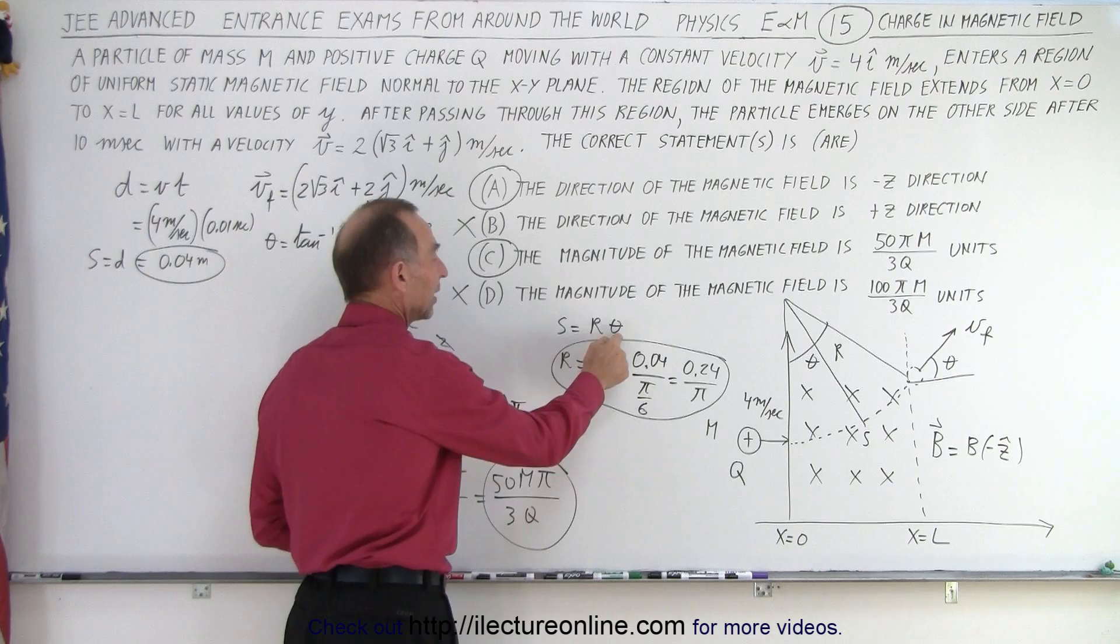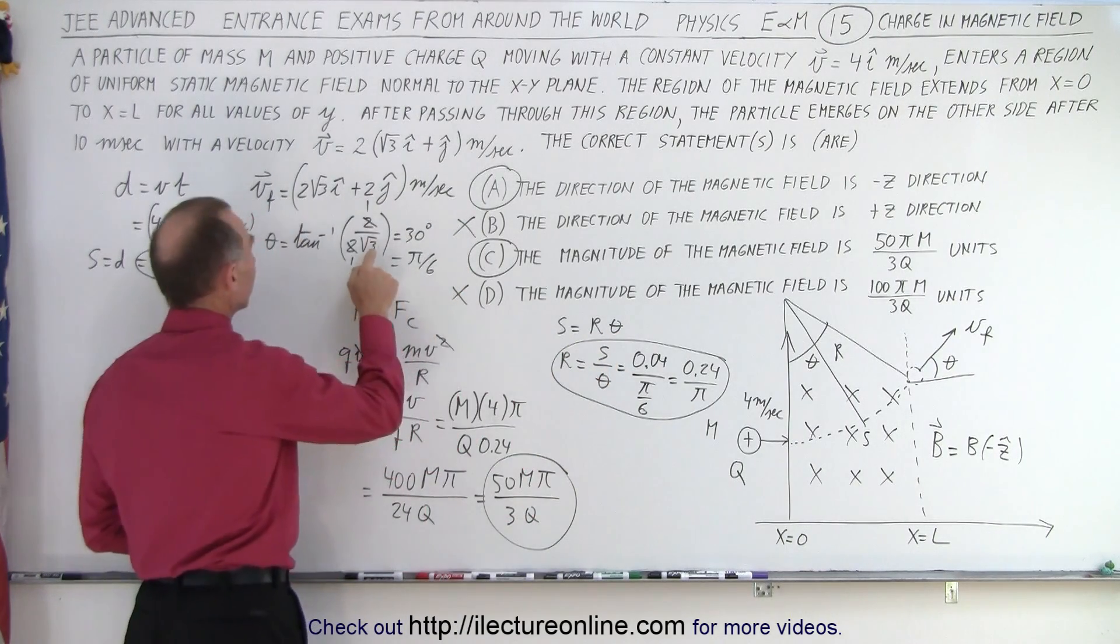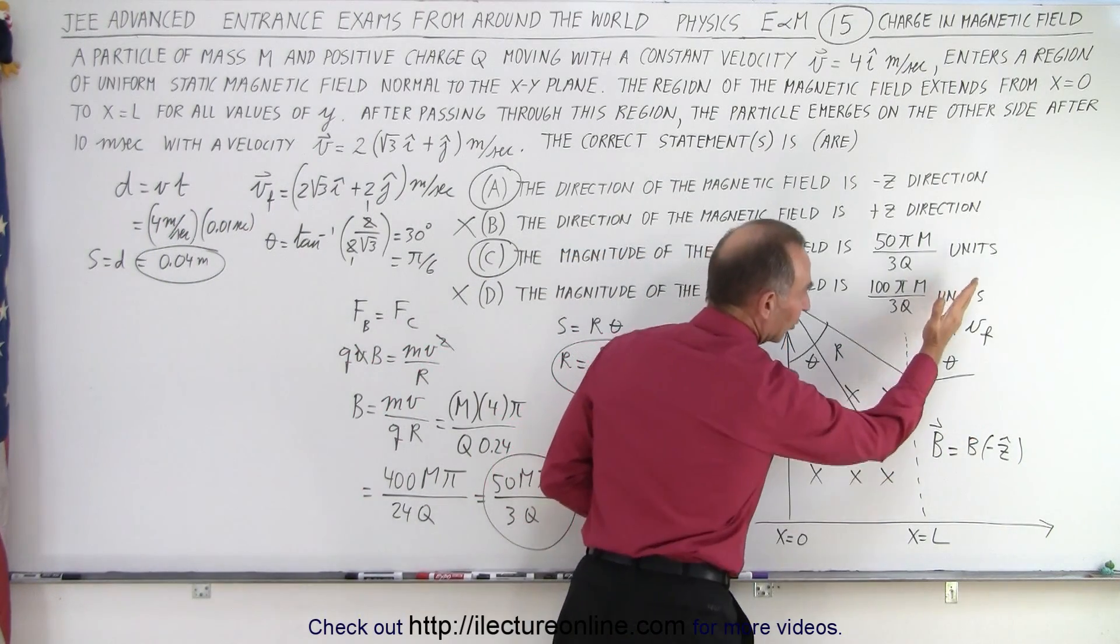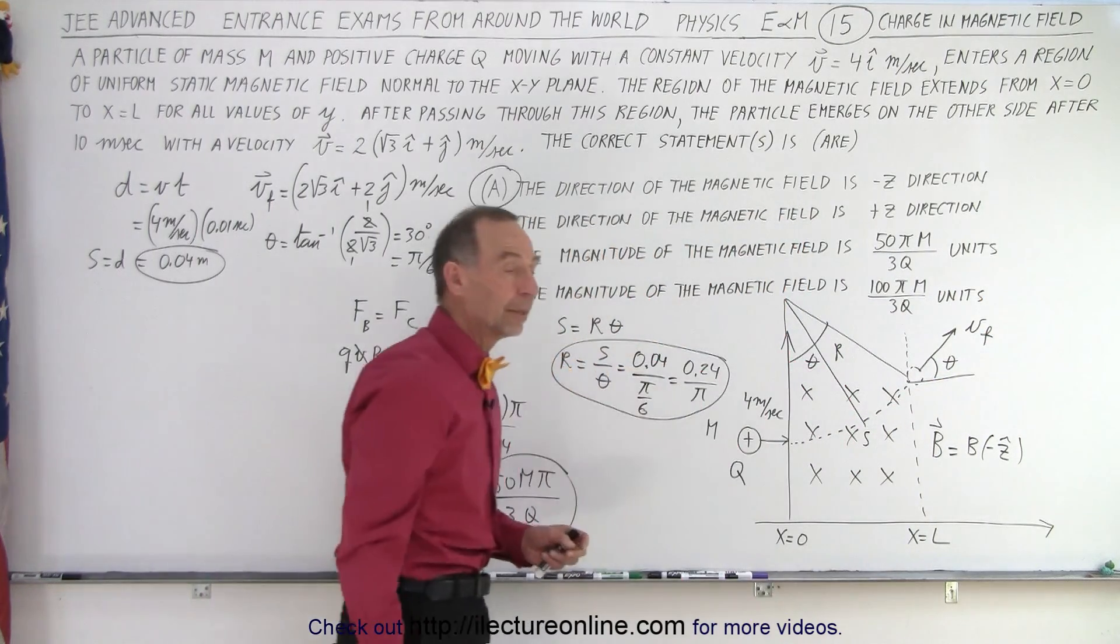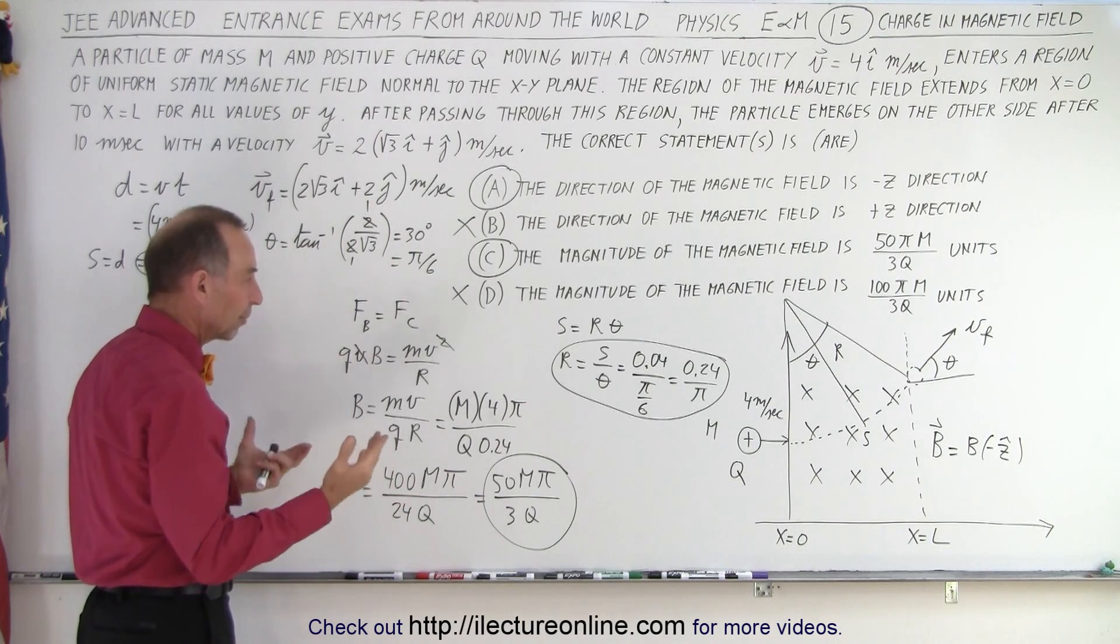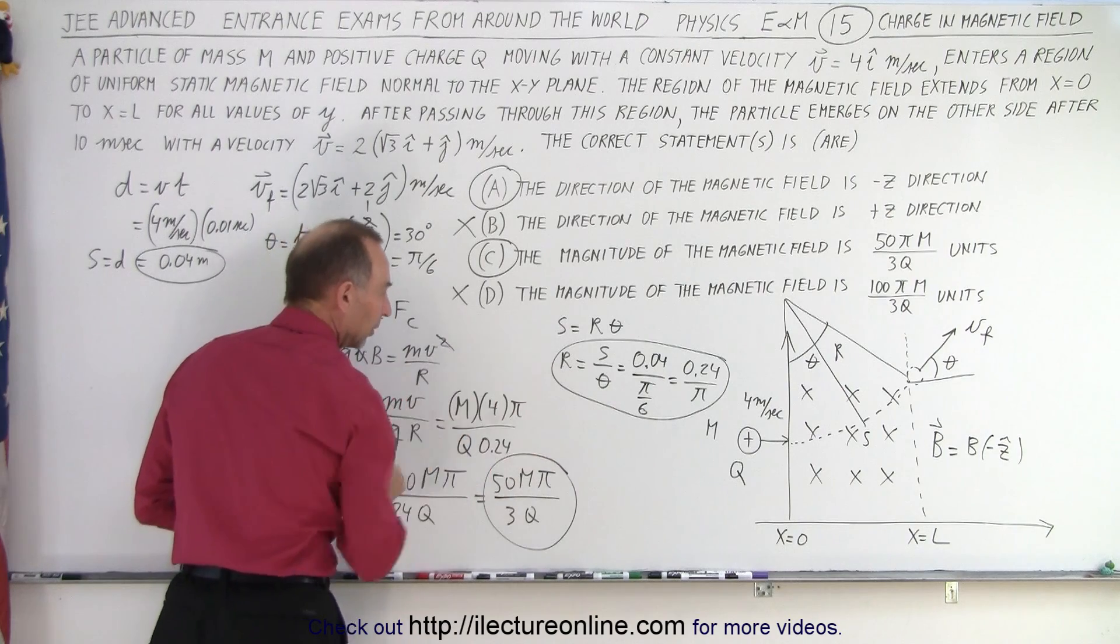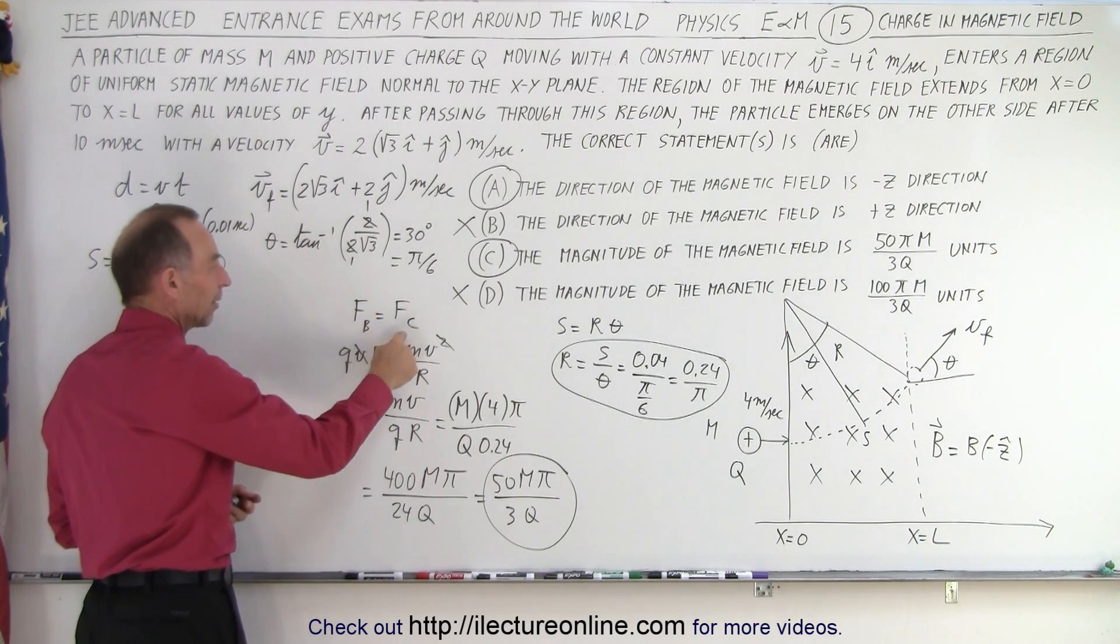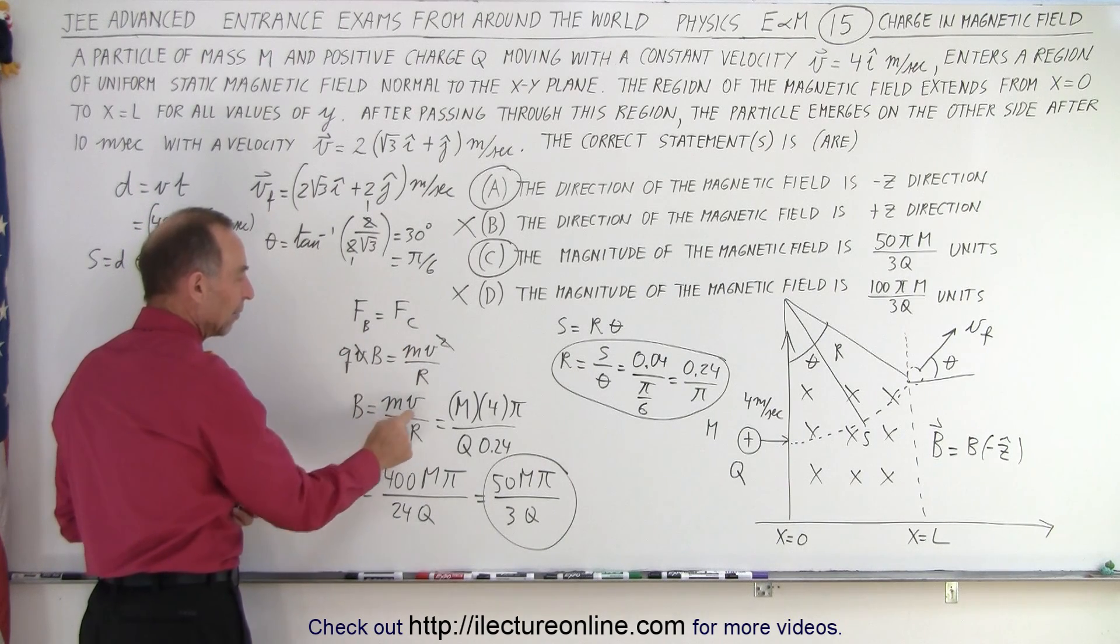Knowing the relationship between arc length equals r times theta, we're able to find r. We're able to find theta because theta is simply a result of taking the arc tangent of the direction as it comes in and the direction it goes out. So the vertical over the horizontal gives us the angle theta, which is 30 degrees or pi over 6. So we're able now to get r, the distance r.